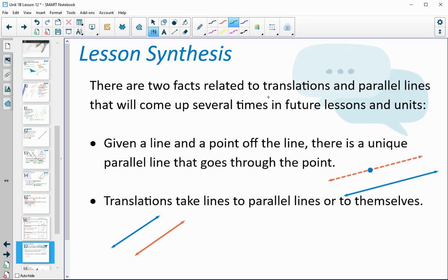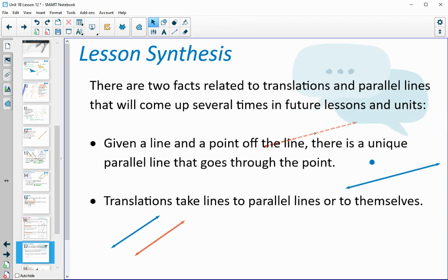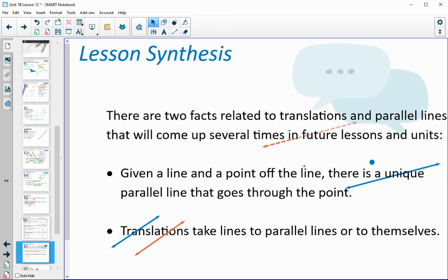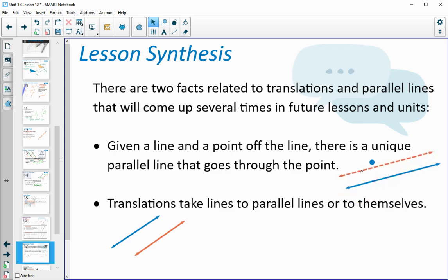So there are two facts related to translations and parallel lines that are going to come up a bunch in the future. One of them is that when we have a line, so when we just have this blue line, when we just have a blue line and a point not on the line, when we are looking at parallel lines to this blue line, there's an infinite number of parallel lines. We can draw parallel lines all over, but there is only one that will also go through this point. So if we have a line and a point not on the line, there's only one parallel line that can go through that point.